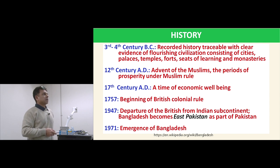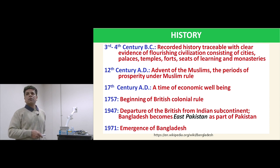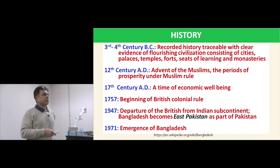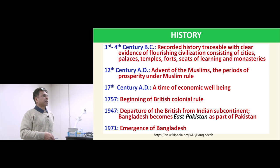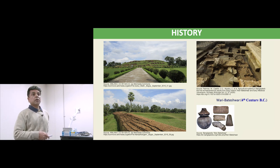In the 12th century AD it was the Muslim period, and in the 17th century there was economic growth. In 1757 began the British colonial rule — the British attacked, fought, and dominated the country for around 200 years. Then in 1947, when the British returned to England, they divided the country into two parts: India and Pakistan. East Pakistan is Bangladesh, and West Pakistan is present-day Pakistan. Then in 1971 came the emergence of Bangladesh. More than 2,000 years ago there were already significant constructions.